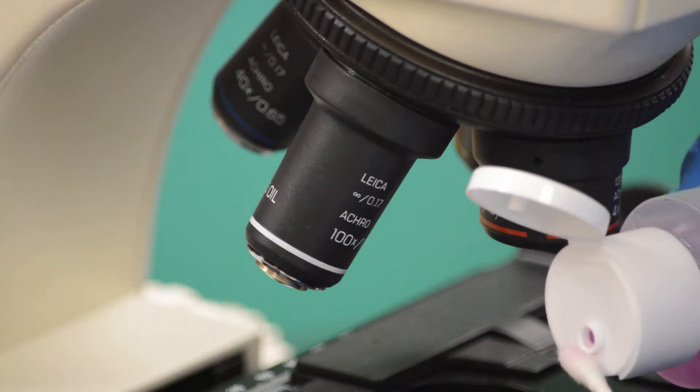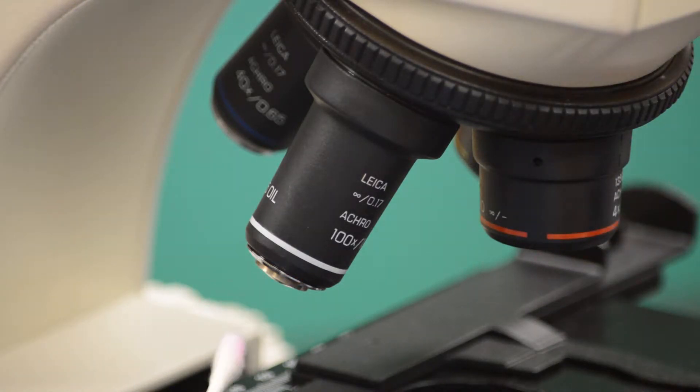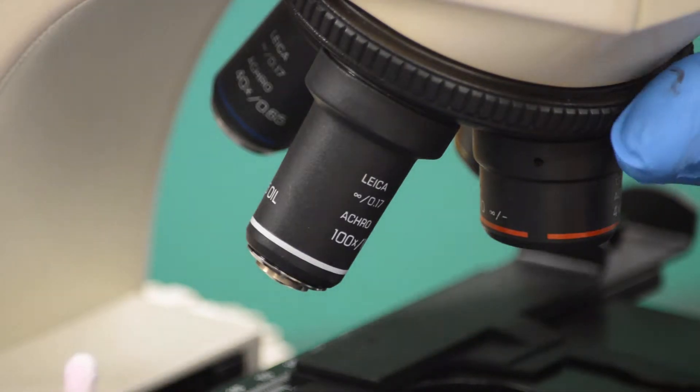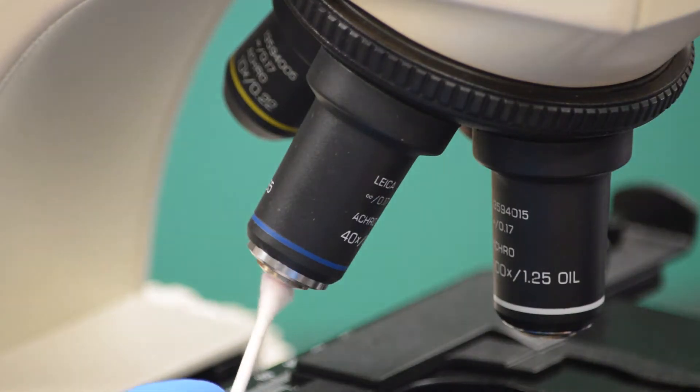A sterile cotton swab can be used in a similar manner to clean hard-to-reach places such as the lens of the 40x objective. Take the cotton swab and spray it once with the lens cleaner solution. Then, holding the swab about an inch back, wipe the surface of the lens, rotating the swab.